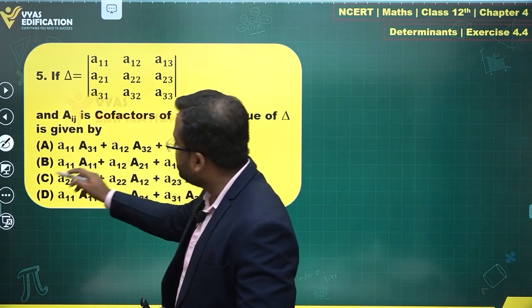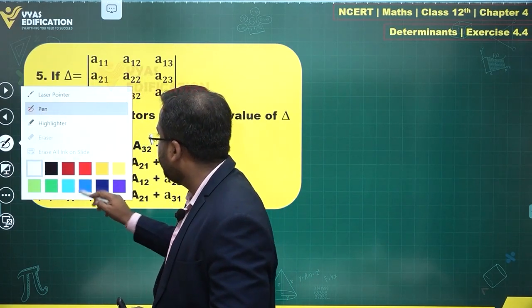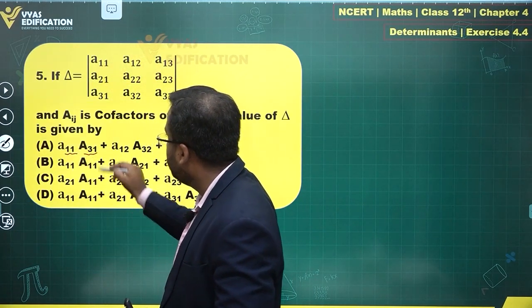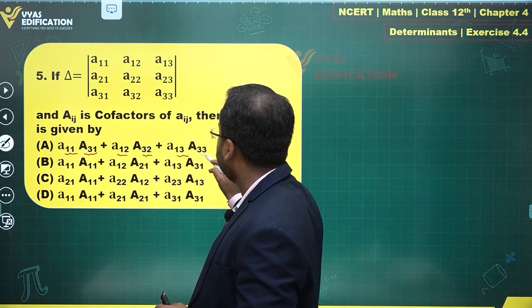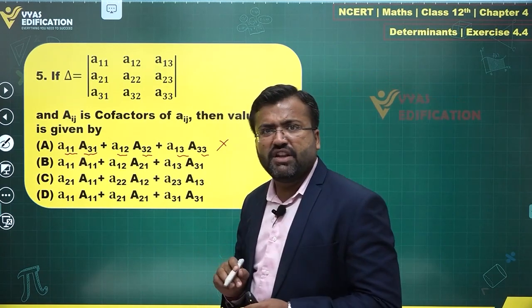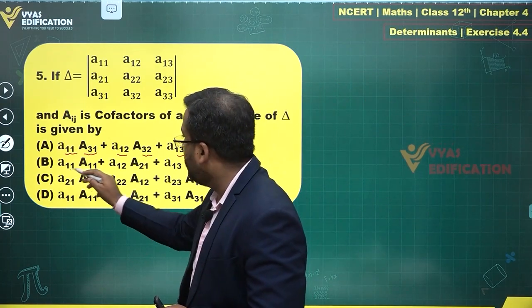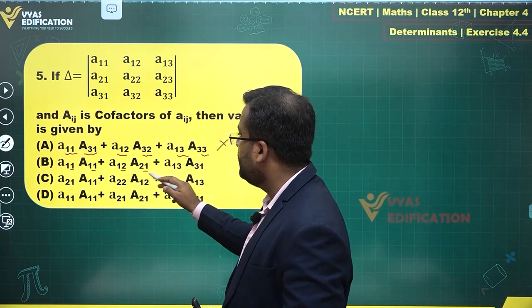So these subscripts over here - we are interested in these subscripts. The subscripts should be exactly the same. They are not the same, therefore this is not giving me the value of the determinant. One one, one one, one two, two one - no, one one, one two, two one.